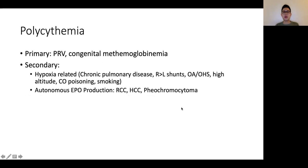Finally, for polycythemia or high hemoglobin levels, think of it as whether it's a primary problem — polycythemia vera or congenital methaemoglobin levels, which is uncommon — or whether it's secondary. Secondary can be due to an appropriate stimulus such as hypoxia, chronic pulmonary diseases, right-to-left shunts, OSA, high altitude, CO poisoning, or smoking, representing an appropriate erythrocytosis response to relative hypoxemia. Or it can be autonomous EPO production occurring in certain malignancies like RCC, HCC, as well as pheochromocytoma, where there isn't an appropriate stimulus but rather autonomous EPO production causing the polycythemia. I hope you found the various approaches helpful. Thank you.